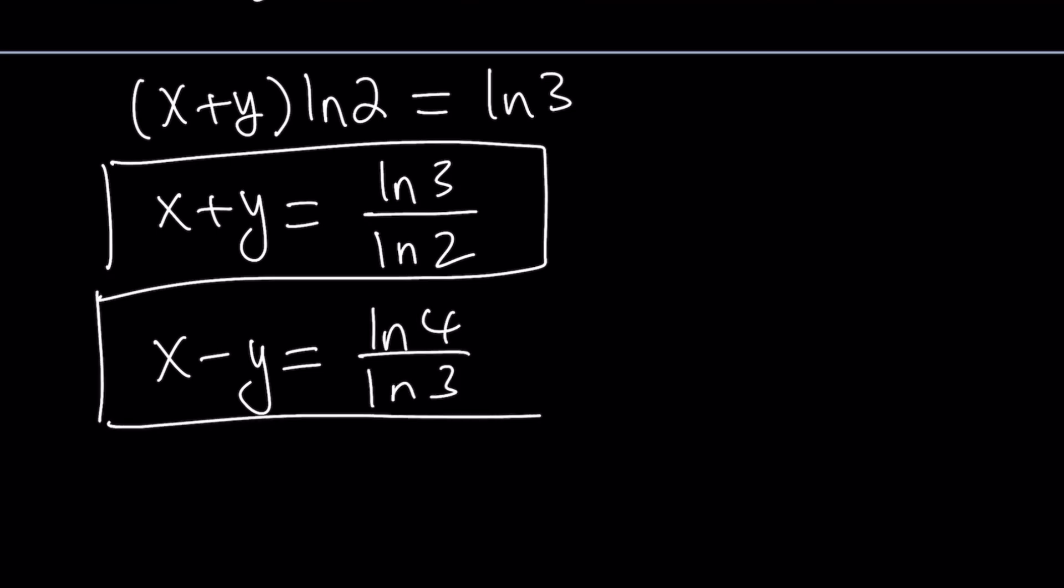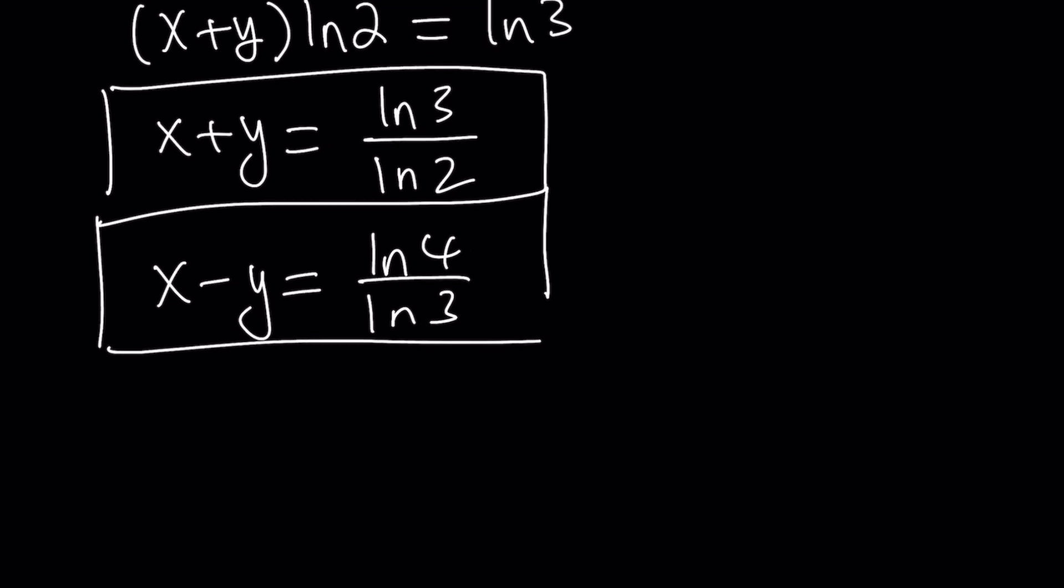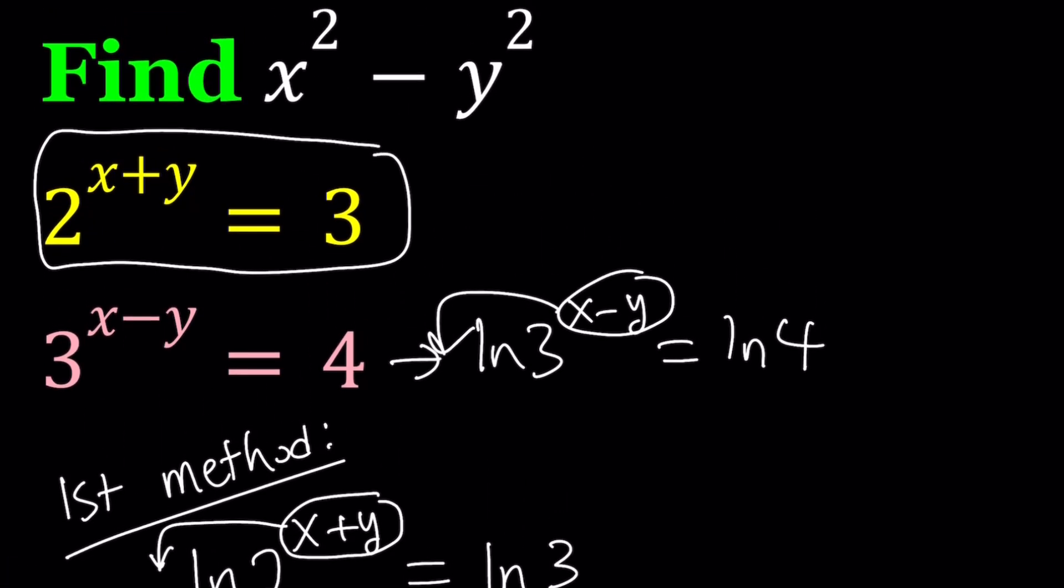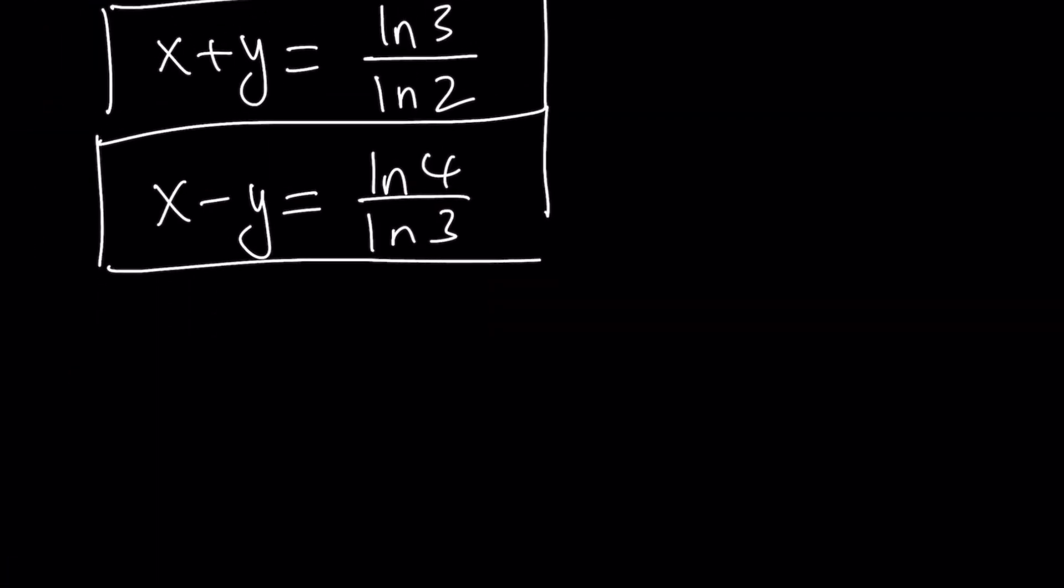Now we got ourselves a nice system. We can go out and solve this system for x and y. And remember, our goal is to evaluate x squared minus y squared. Let's go ahead and do that.